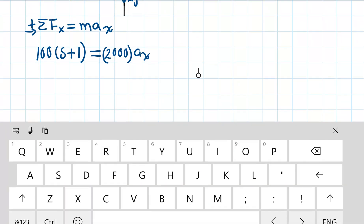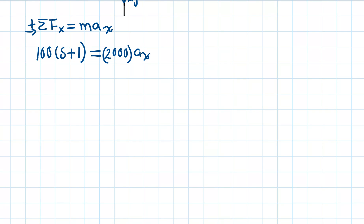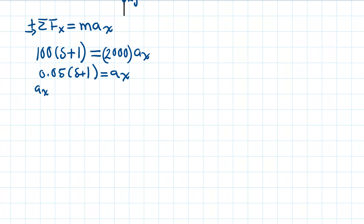We solve for acceleration in the x-direction: dividing both sides by 2000, we get 100 divided by 2000 times (s + 1), which equals 0.05(s + 1). So the acceleration as a function of position is a(s) = 0.05(s + 1).